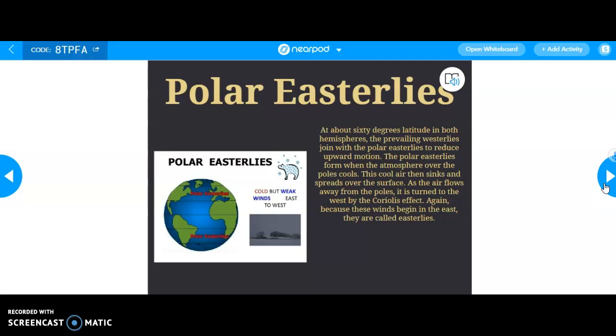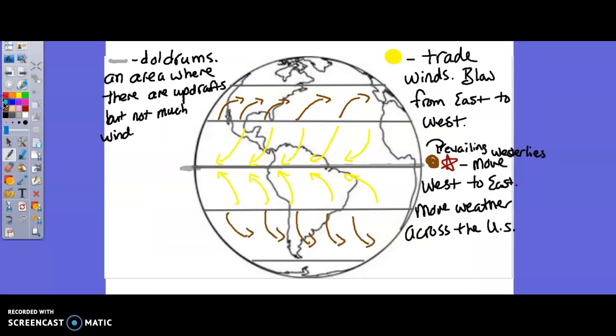The polar easterlies. I think this kind of tells you exactly what it does, right? They're polar, so they're cool air. They're easterlies. They blow to the east. They are kind of weak. They blow east to west. So if I were to color the polar easterlies in, they're going to look kind of like this. They blow east to west.